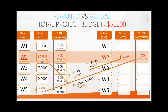Now looking at actuals: in week two, Miss Ann spent fifteen thousand five hundred dollars. What she spent in real time is what we call Actual Cost. She completed 35 miles, which equals 35 percent of the work. If you multiply 35 percent by the total budget of fifty thousand dollars, you get seventeen thousand five hundred dollars — and this value is called Earned Value.